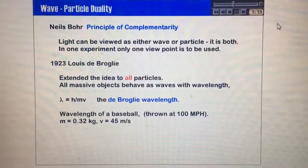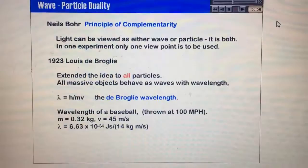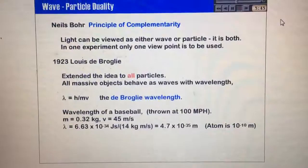Well, the wavelength in that particular case then is Planck's constant, which remember we said was 6.63 times 10 to the minus 34th joules per second, a very small number, divided by 14 kilogram meters per second. Well, that comes out to be 4.7 times 10 to the minus 35th meters.